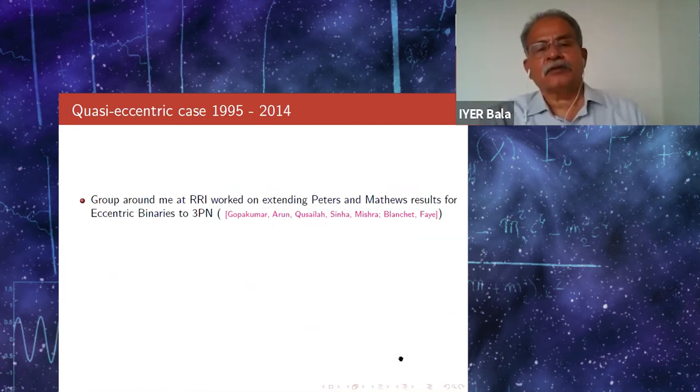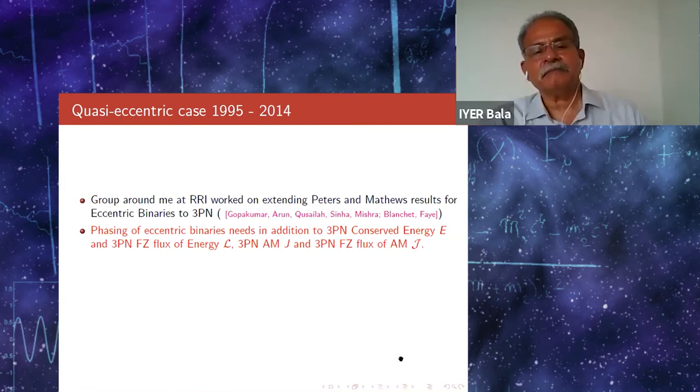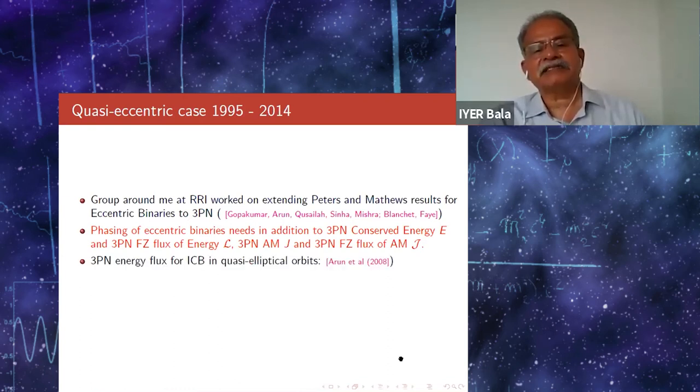Therefore, over the years, my group at RRI essentially looked at extending the Peters and Mathews results to eccentric binaries up to 3PN order because the formalism could be generalized to do that. The phasing of eccentric binaries would need, in addition to the conserved energy and the far zone energy flux, the conserved angular momentum and the 3PN flux of angular momentum also.